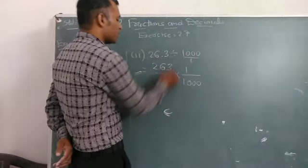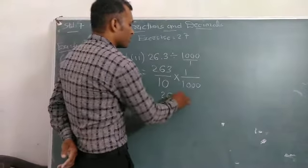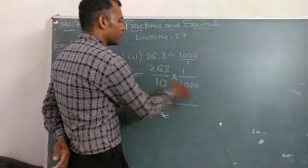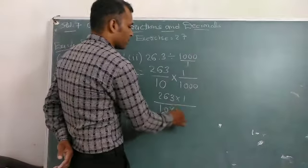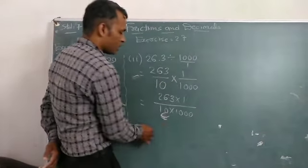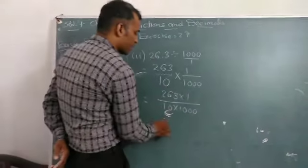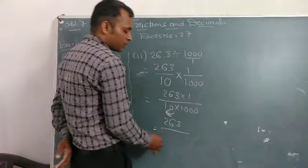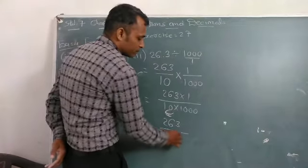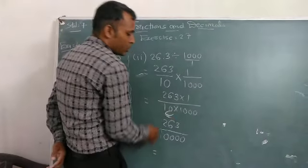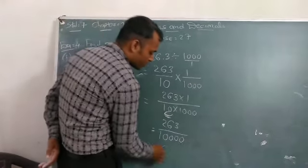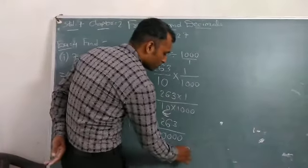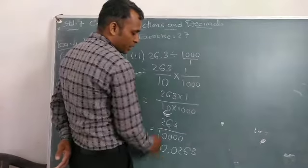Now, combine it, 263 multiplied by 1 upon 10 multiplied by 1000. So now, 263 upon 10,000 is 0.0263. There are 4 zeros.